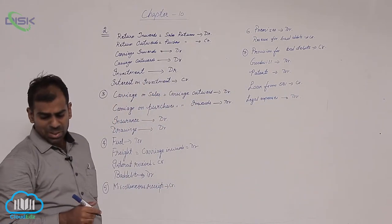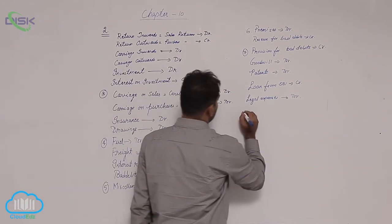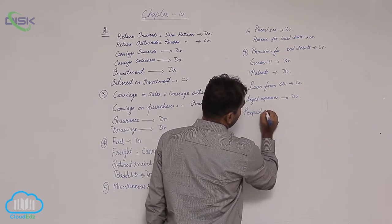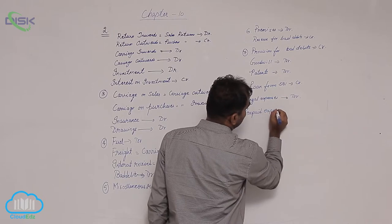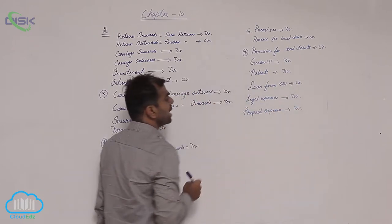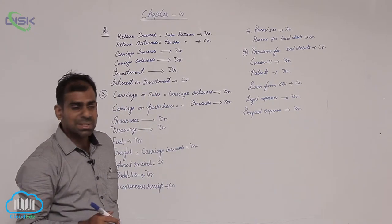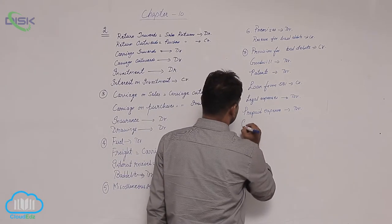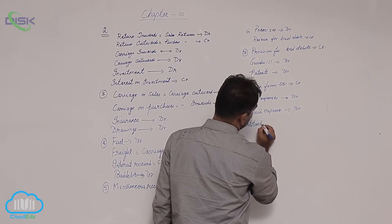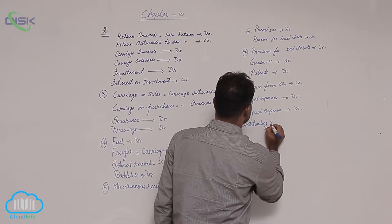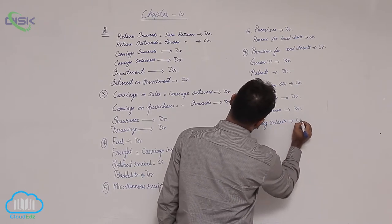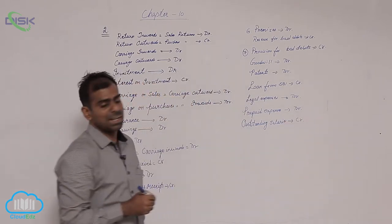Next, you have prepaid expenses. As discussed already, prepaid expenses are personal accounts, so they show debit balance. Next, we have outstanding salary — you have to pay that amount, so it is still a liability. Liabilities show credit balance, therefore outstanding salaries show credit balance.